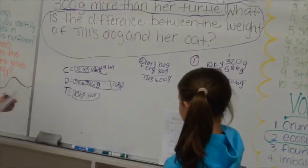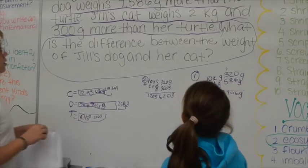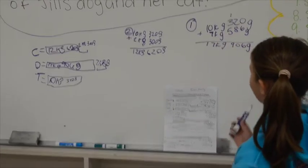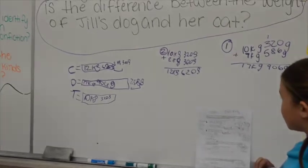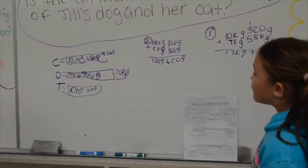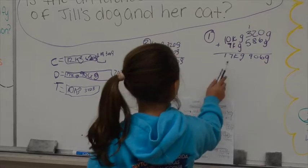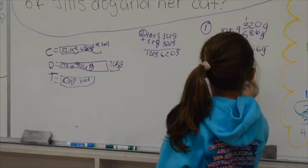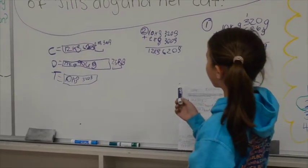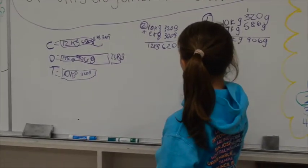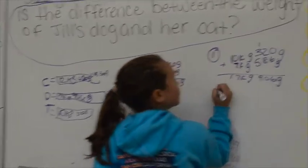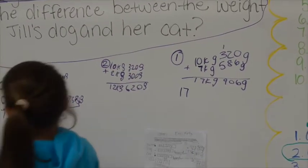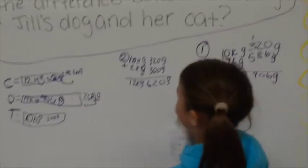All right, now Erin, what was the question asking us? It asked us: what is the difference between the weight of Jill's dog and her cat? So what would be our third step to actually get our answer? So you minus this — we subtract 16 kilograms 560 grams and 12 kilograms 620 grams. Exactly, because that's the weight of which two animals? The dog and the cat. Exactly. Now you're subtracting the difference.